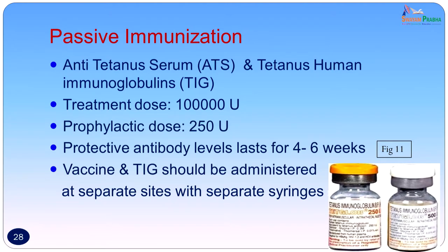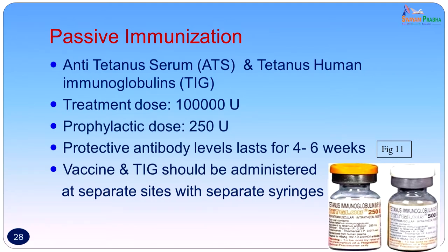Passive immunization is not recommended routinely, except in patients with a massive road injury or tetanus-prone wound. Anti-tetanic serum or tetanus immunoglobulins can be used. Whenever passive immunization is given, active immunization should be started side by side. The treatment dose for passive immunization is 1 lakh units; the prophylactic dose is only 250 international units. Protective antibodies last about 4 to 6 weeks, which is why active immunization must also be started concurrently. Both should be administered at separate sites with separate syringes.